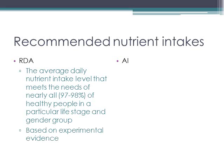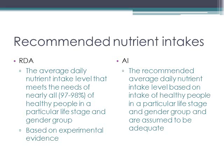The RDAs are based on experimental evidence, so we have a pretty good idea of the average daily nutrient intake level that is going to meet the needs of all of these individuals. The AI, or Adequate Intake, is the recommended average daily nutrient intake level based on intakes of healthy people in a particular life stage and gender group that are assumed to be adequate. The AI is essentially scientific evidence and educated guesswork — based on observed or experimentally derived numbers. A nutrient will only have an AI when there's not enough information or evidence to set an RDA, so a nutrient will not have both an RDA and an AI; it will only have one or the other.